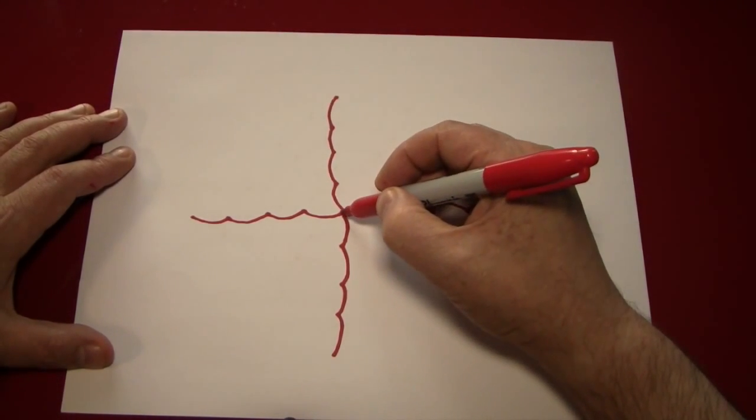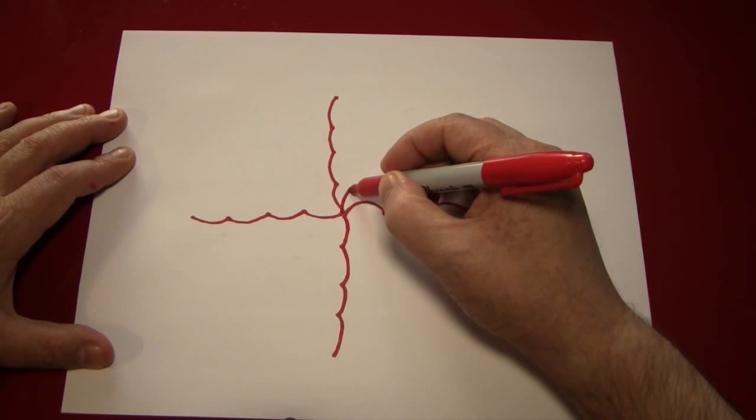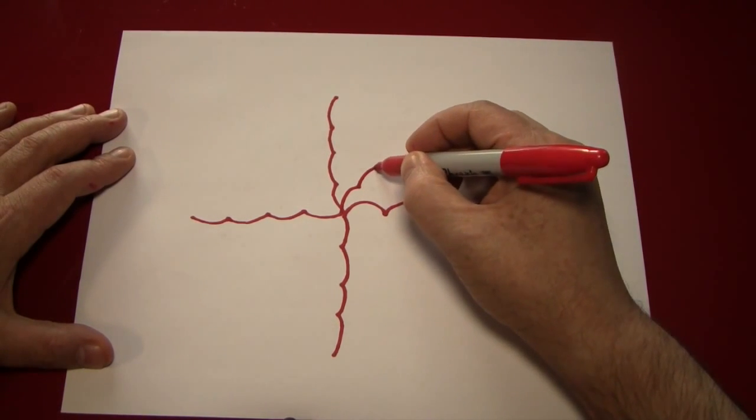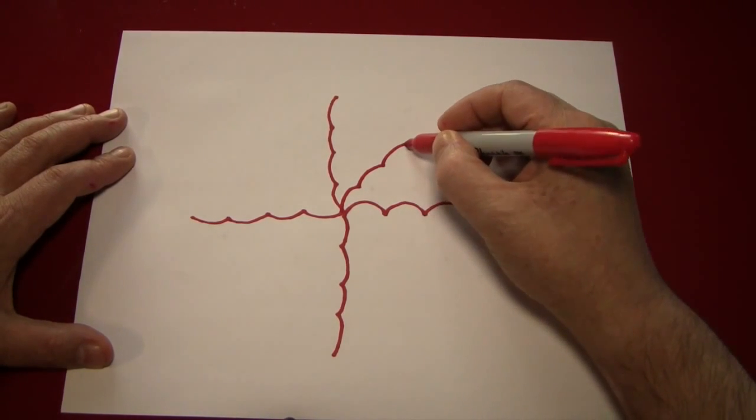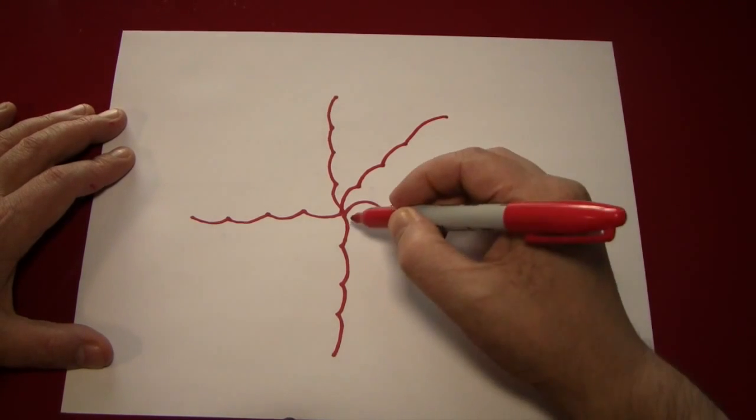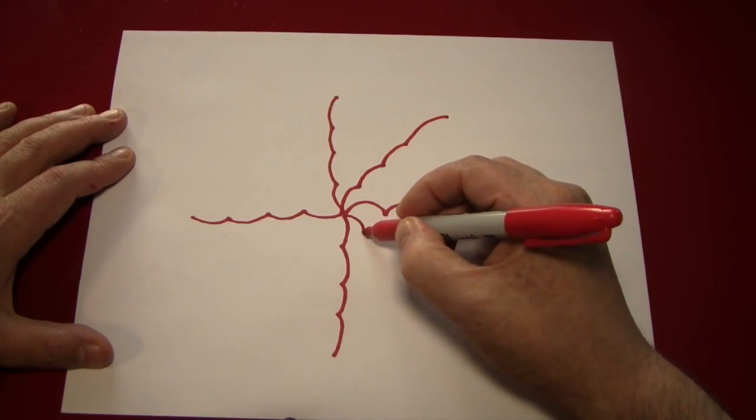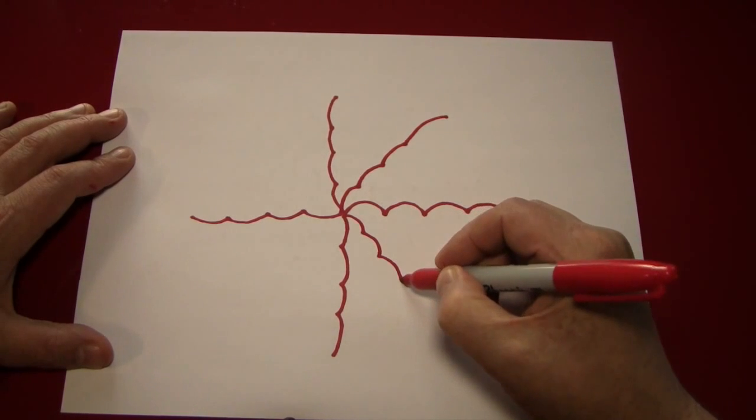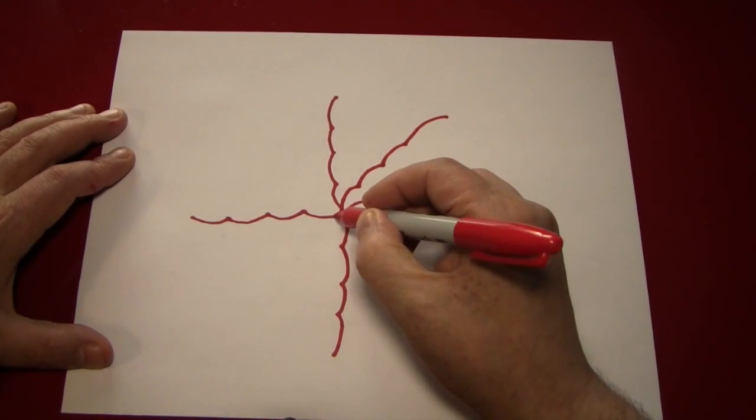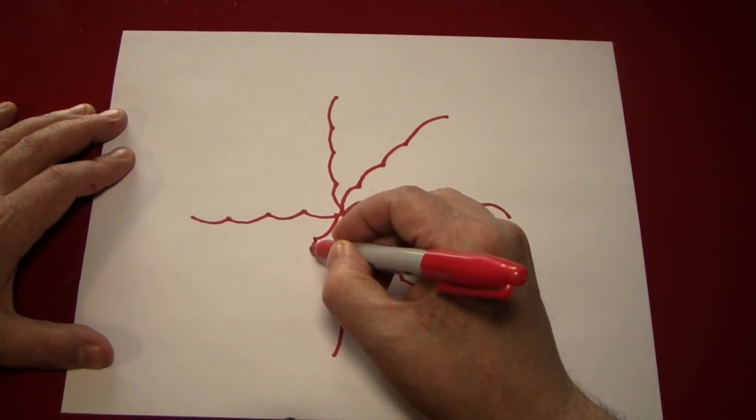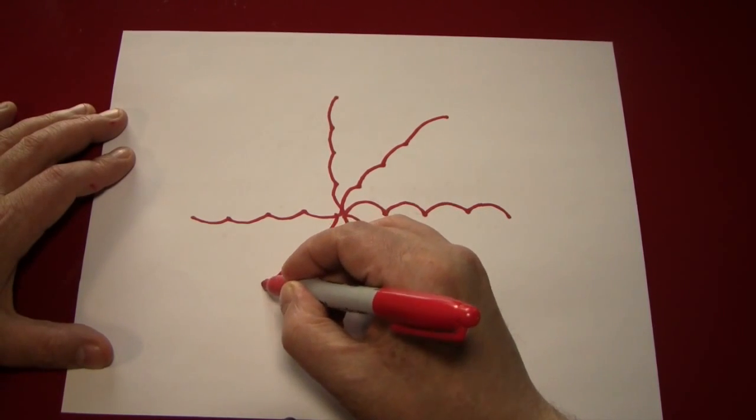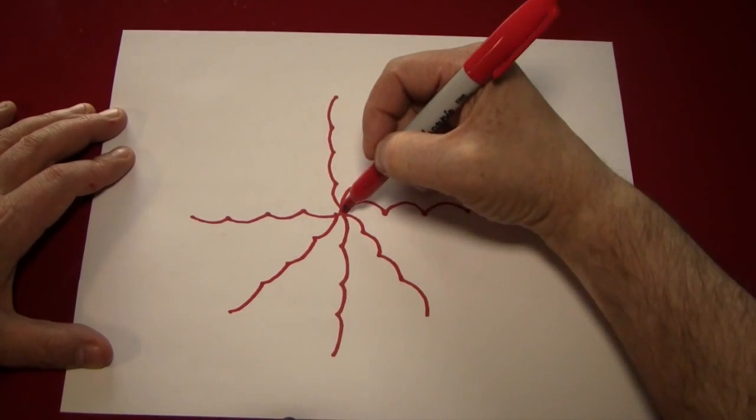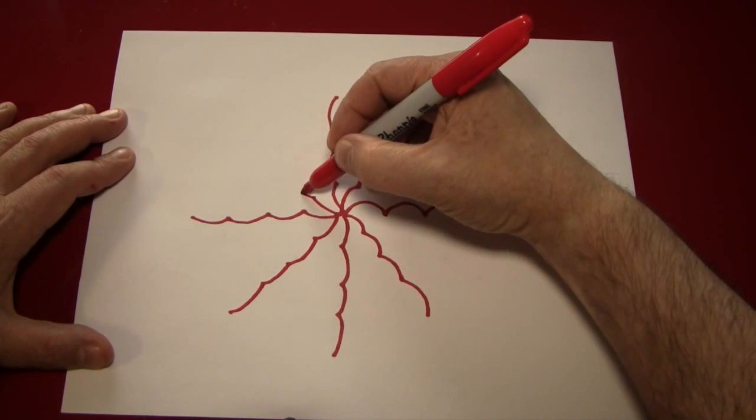So when you make another line between these lines, you can follow the same pattern. You're going to want to make these curves fairly similar in length.